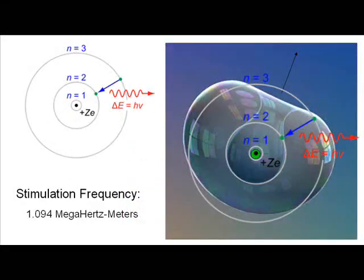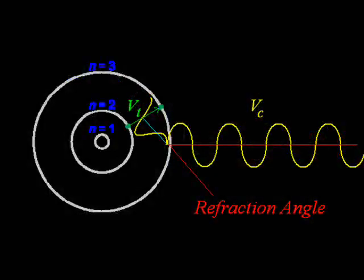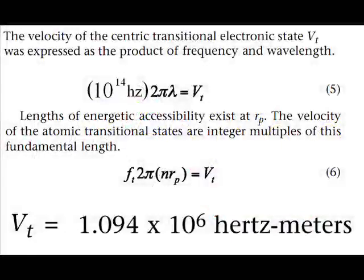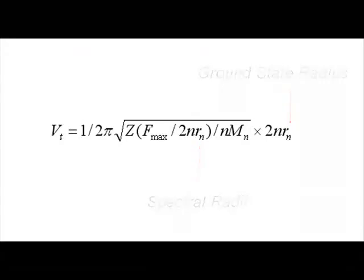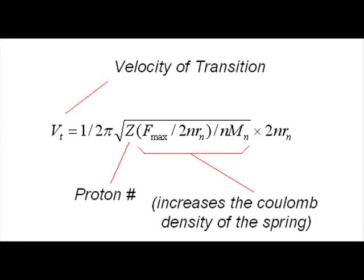During the phase transition between electron states, the fields which bind the atom to each parent state must be released in order to reconfigure into the daughter state. During this quantum transitional phase, the electron travels at a specific velocity. This velocity is the same for all atoms, although the dimensions and frequencies change according to the change in density between the different nuclei.